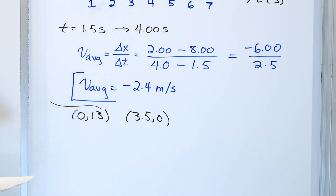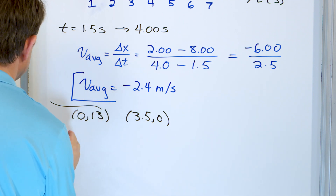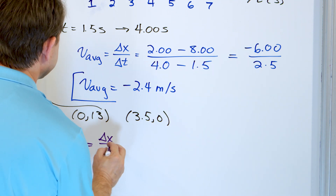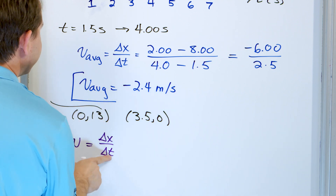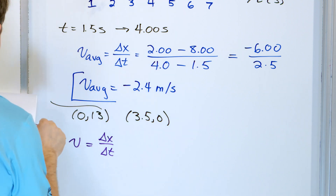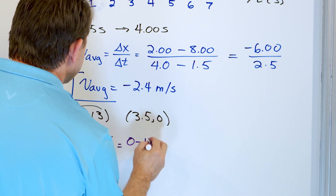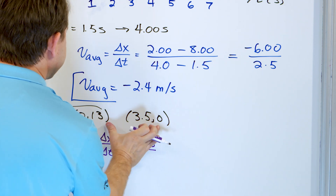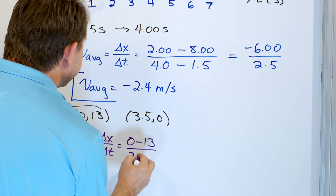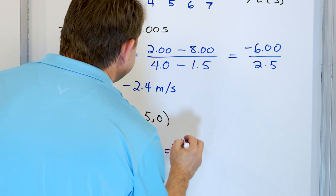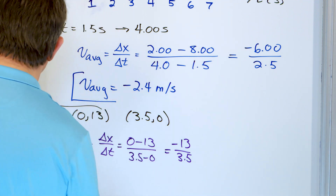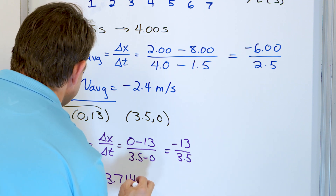We calculate rise over run — delta x over delta t. Delta x is the rise, delta t is the run. Subtracting: 0 minus 13 on top, and 3.5 minus 0 on the bottom. That gives negative 13 over 3.5. The instantaneous velocity equals negative 3.714 meters per second.